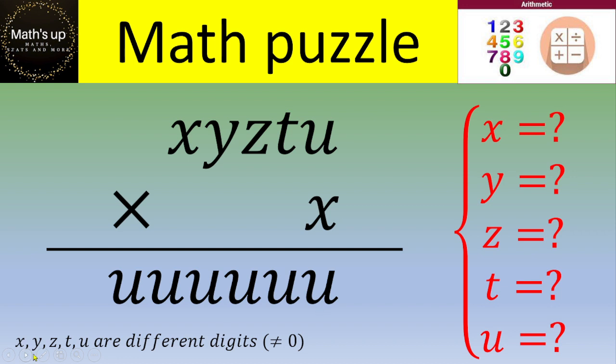And x, y, z, t, u are different digits and all these digits are different from 0. So if you want to give a try, please pause the video. Otherwise, let's see the solution.